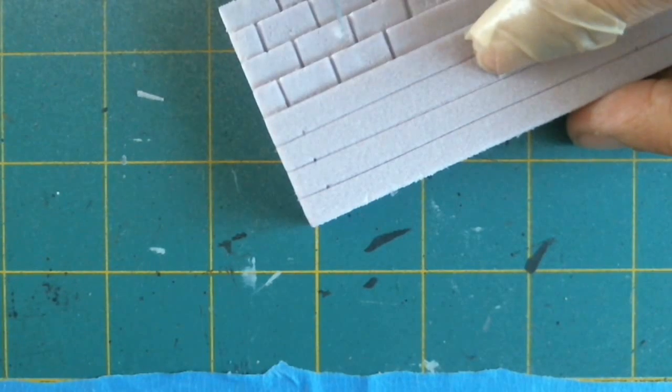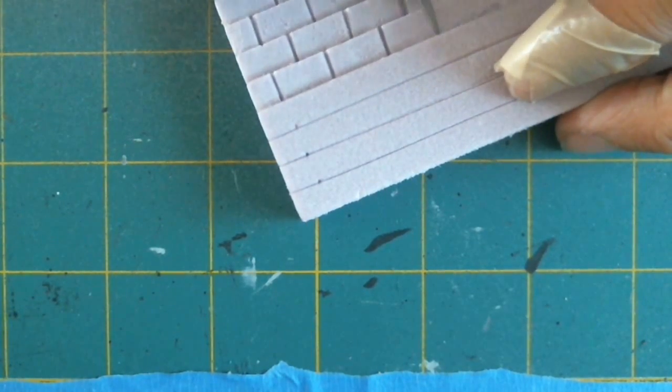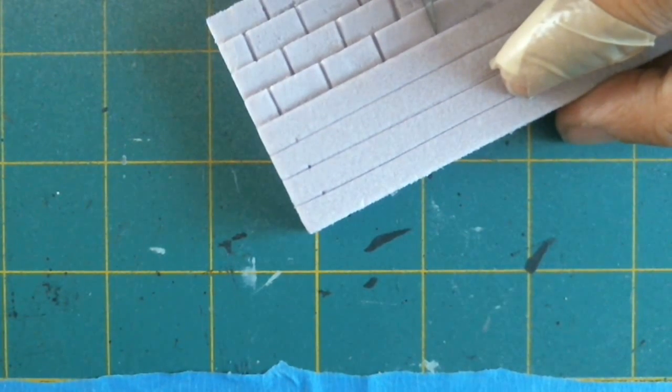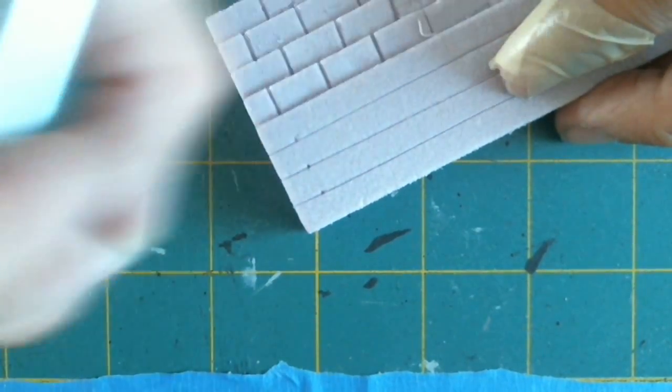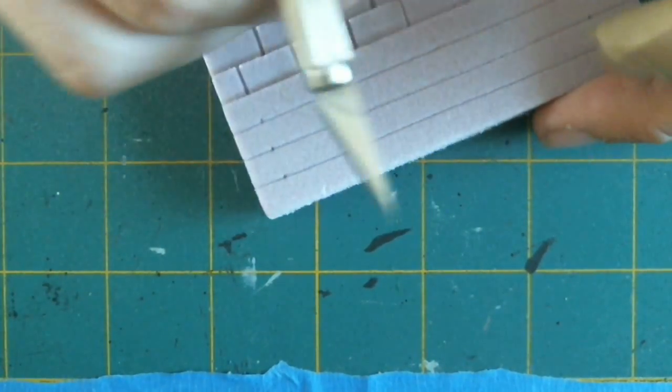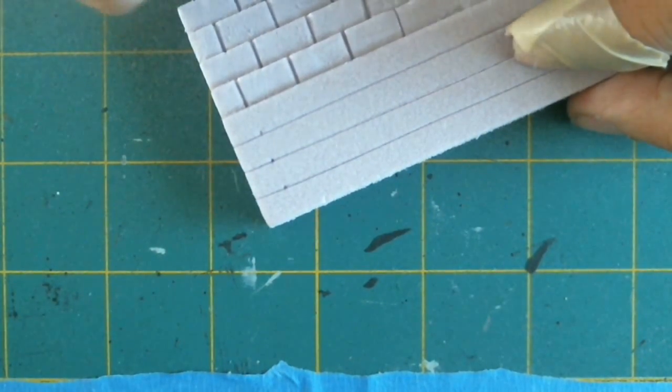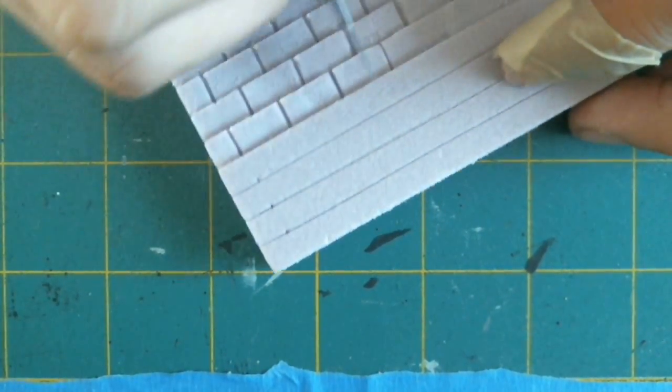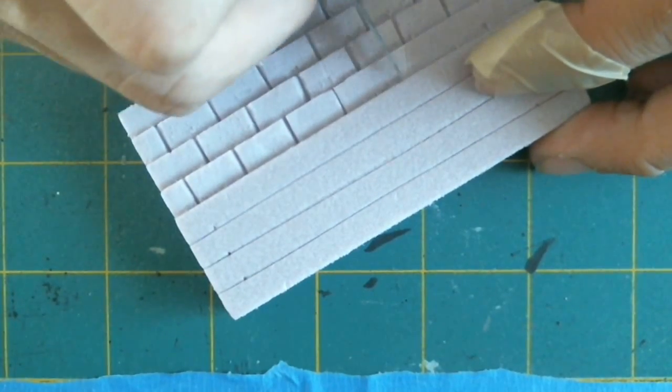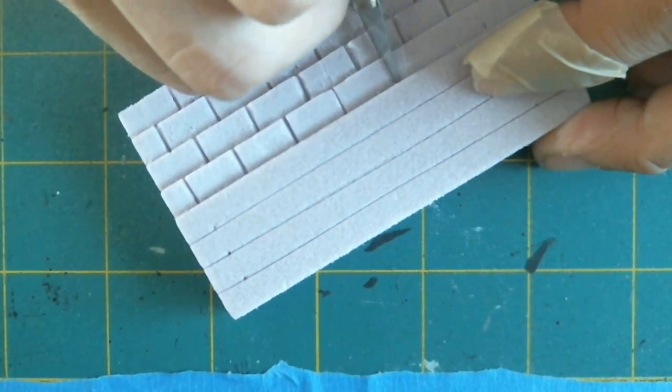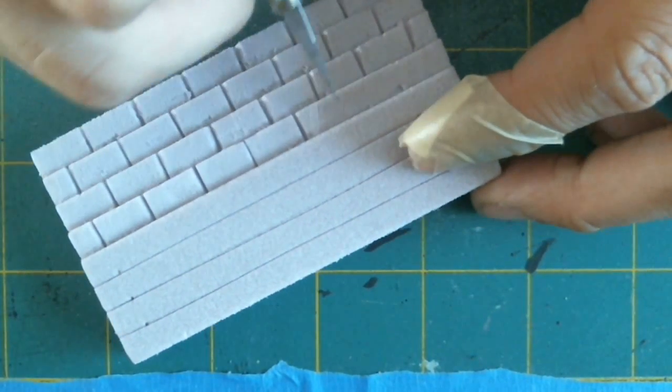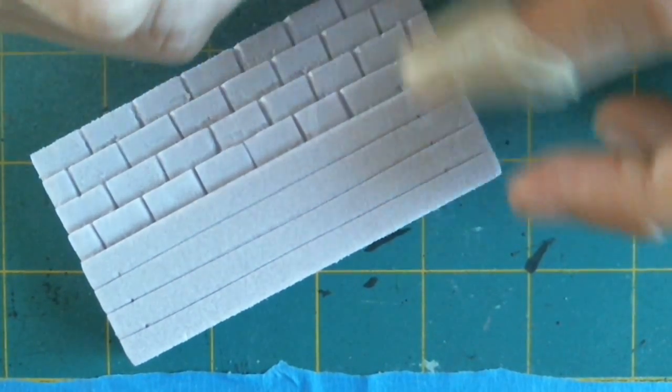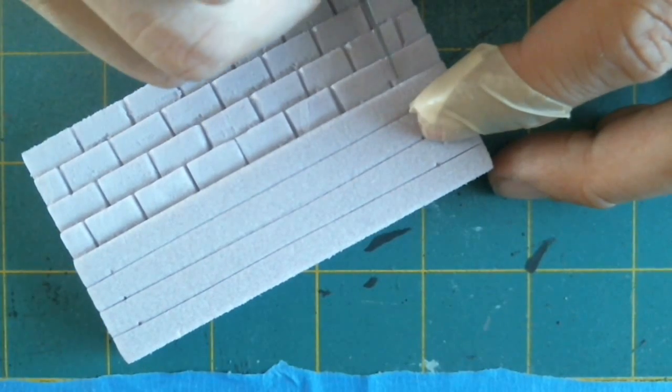You can also achieve this effect right here with like a Dremel. You know, you put a nice little small engraving tip on it and it'll just go all the way across.